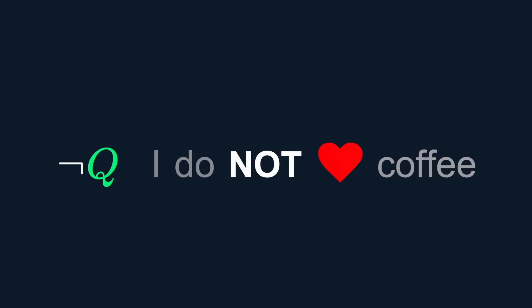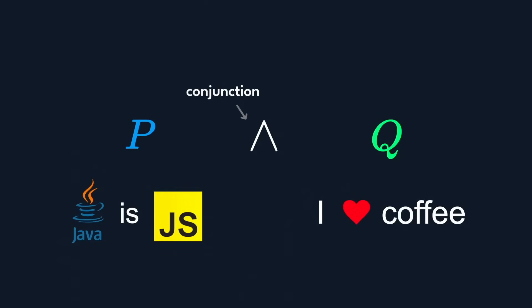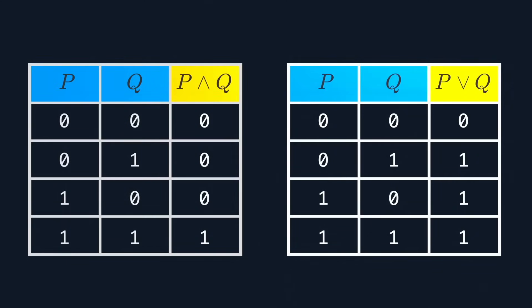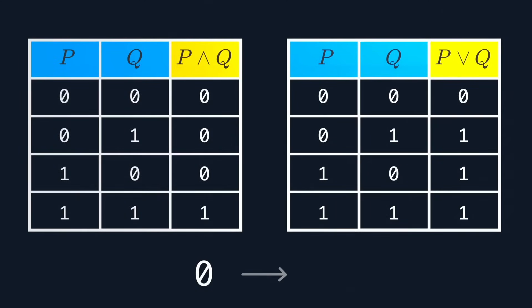This stands for negation which is like adding a not in the statement. Then we have this which means conjunction, known as and. And finally disjunction which is or. We can represent the behavior of each logical symbol in a table. The zeros stand for false, and ones stand for true. This table is called the truth table.